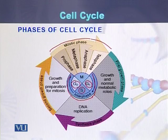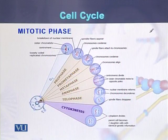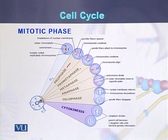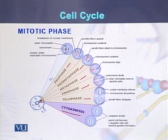Looking at the mitotic phase in detail, it consists of four to five steps: prophase, prometaphase, metaphase, anaphase, and telophase. At the end of these phases, a single cell undergoes cytokinesis and converts from one cell into two cells.